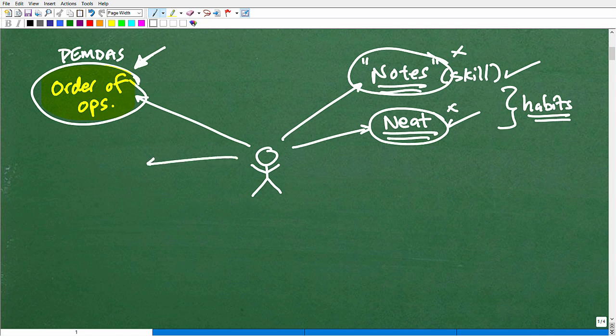Now, kind of associated with the order of operations is positive, negative numbers. Basic rules for integers or just adding positive numbers, negative numbers, multiplying, dividing, positive, negative numbers. This is one of these areas that a lot of students say, oh, this is easy. The rules are easy. But guess what? I see a ton of mistakes here.